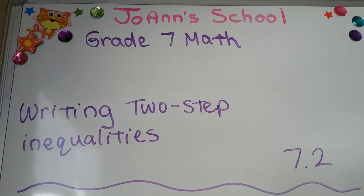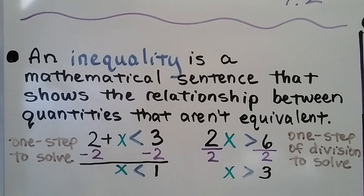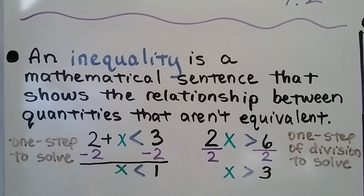Writing two-step inequalities, lesson 7.2. An inequality is a mathematical sentence that shows the relationship between quantities that aren't equivalent — they aren't equal. So you notice there's no equal sign.